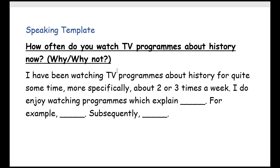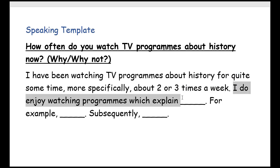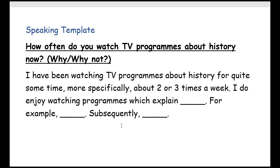The next question is: 'How often do you watch TV programs about history now? Why or why not?' You can start with 'I have been watching TV programs about history for quite some time — more specifically, about two or three times a week.' This uses the present perfect continuous. Then say 'I do enjoy watching programs which explain...' and describe what kind of programs you like. Follow with 'For example...' to give one specific example, and use 'subsequently' — meaning 'as a result' or 'later' — to add more information.